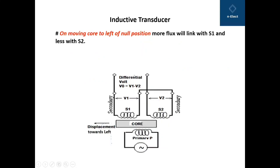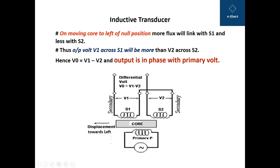When the core is moved to the left by some distance, more flux links from the primary to secondary S1 compared to S2. Hence V1 is greater than V2, and the differential output voltage V0 equals V1 minus V2. In this case, the output voltage V0 is in phase with the primary voltage.